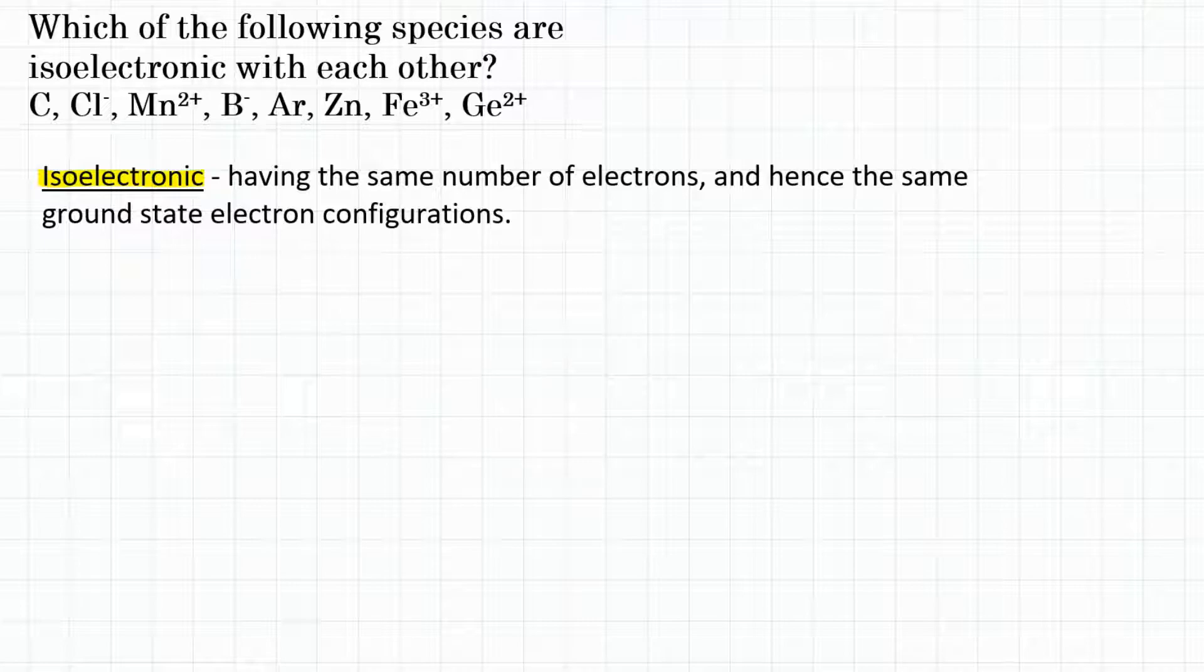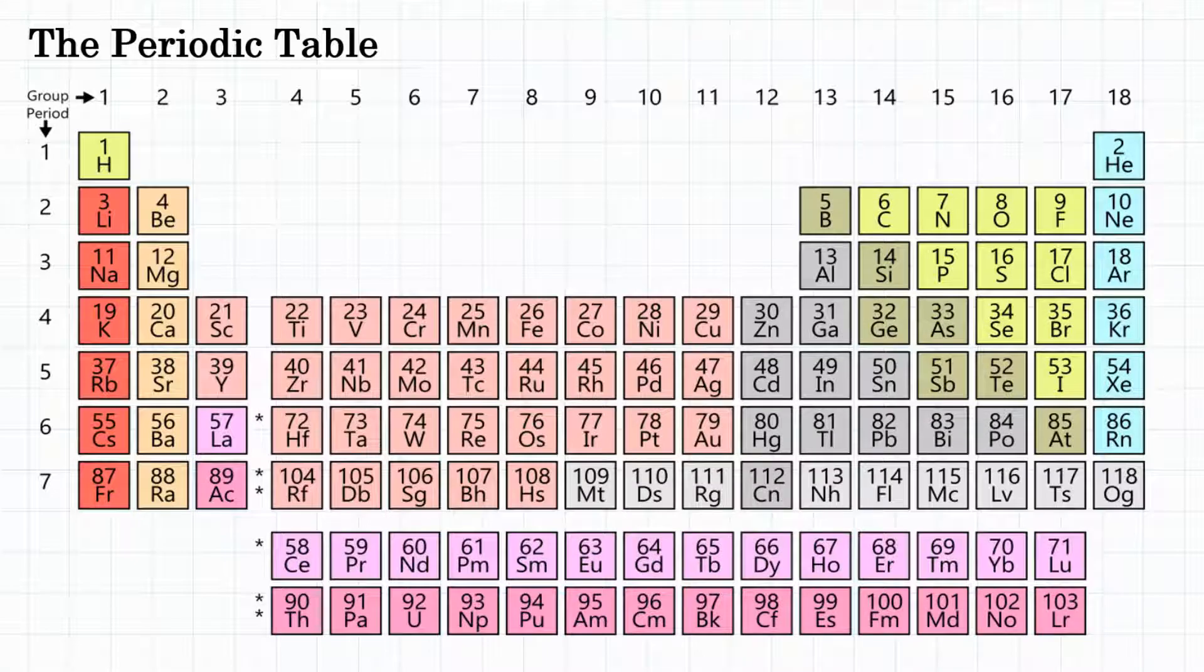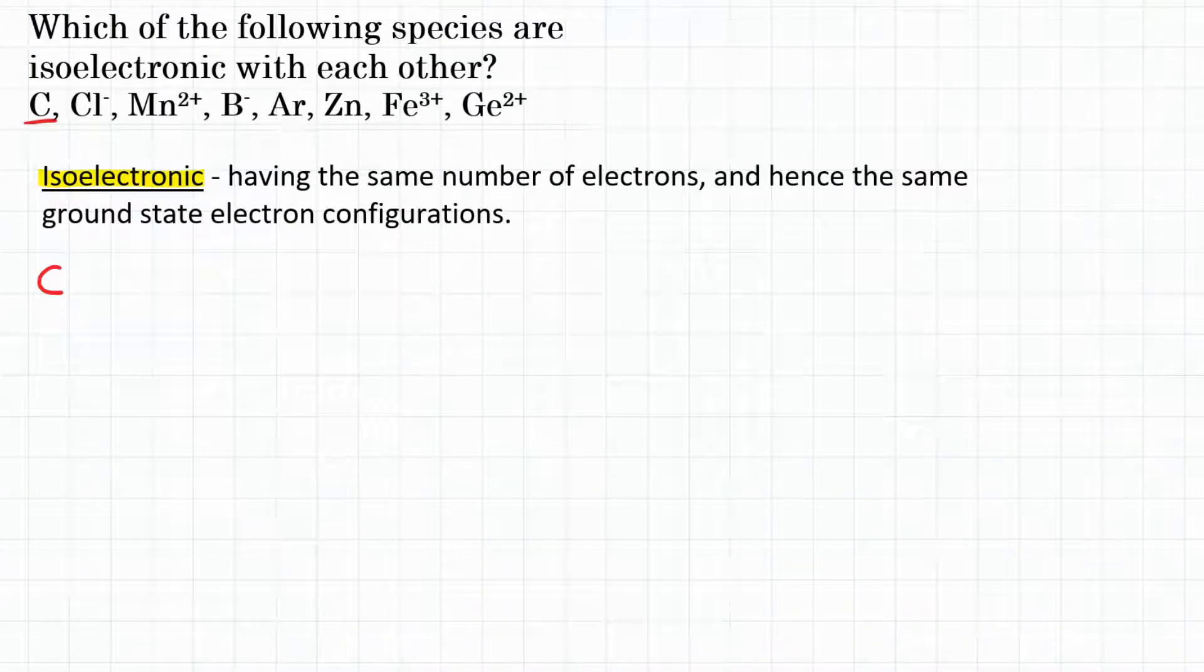So let's look at our different atoms and ions. Our first one is just C, which is carbon. Isoelectronic is just the number of electrons, so we're going to have to look at our periodic table to see how many electrons carbon has. Looking at the periodic table, we can find carbon here, where it is element number 6. That means it has 6 protons, and if it is a neutral atom, it will also have 6 electrons. So carbon has 6 electrons.